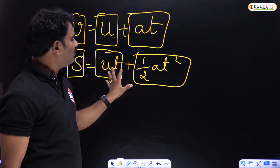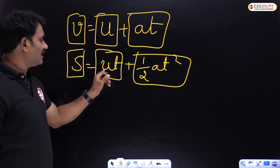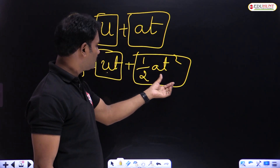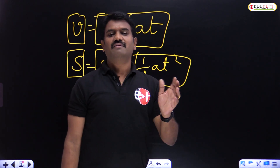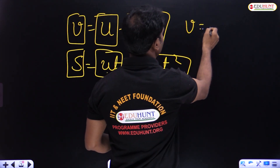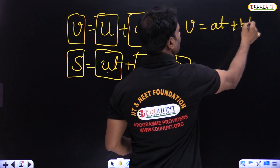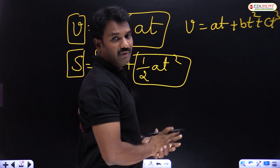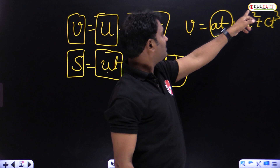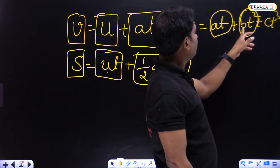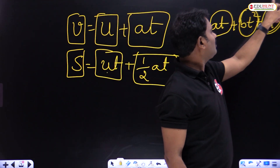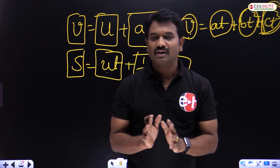Using the principle of homogeneity, when unknown quantities are given, you can identify them. For example, if a physical quantity v equals at plus bt squared plus ct cubed, then 'at' is velocity, 'bt squared' is velocity, and 'ct cubed' is also velocity — because velocity equals velocity. Even though b and c are unknown constants, their product with the time terms must give velocity.